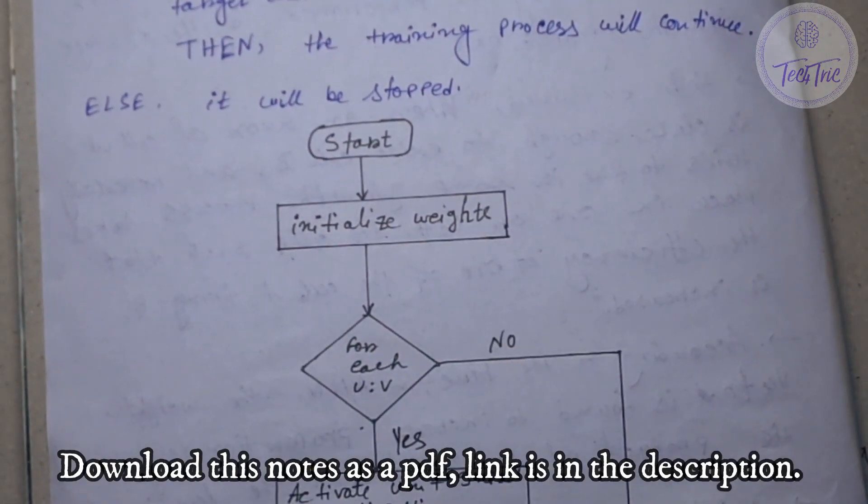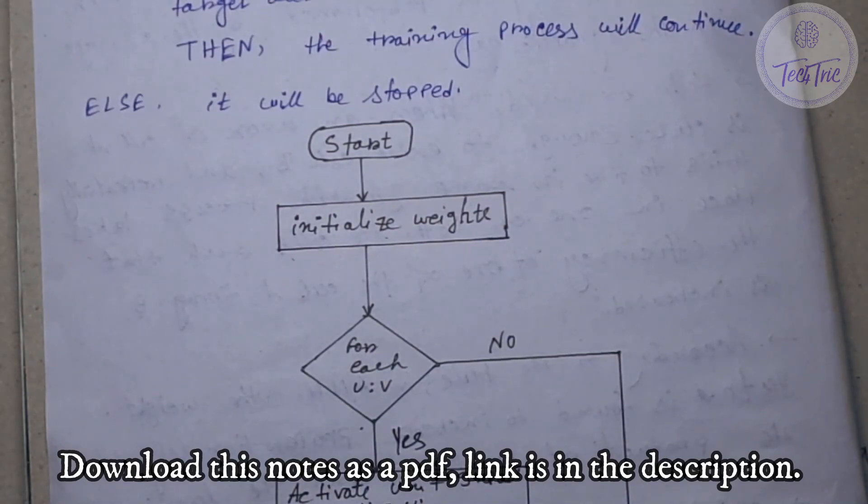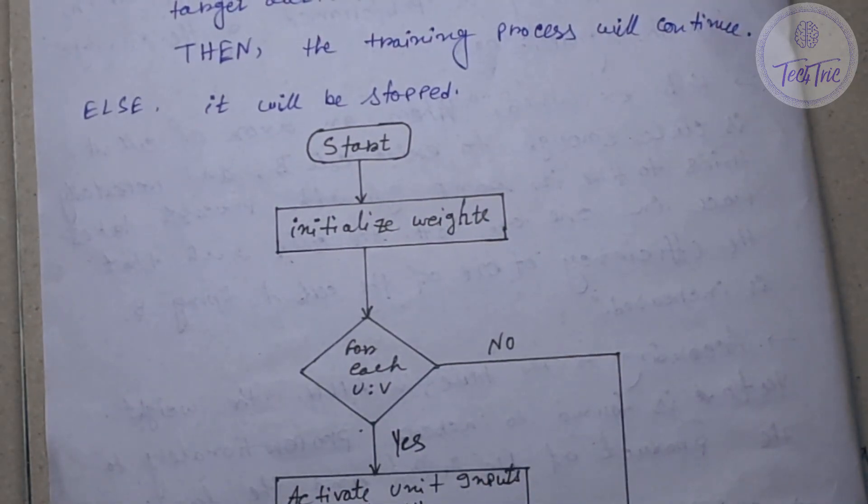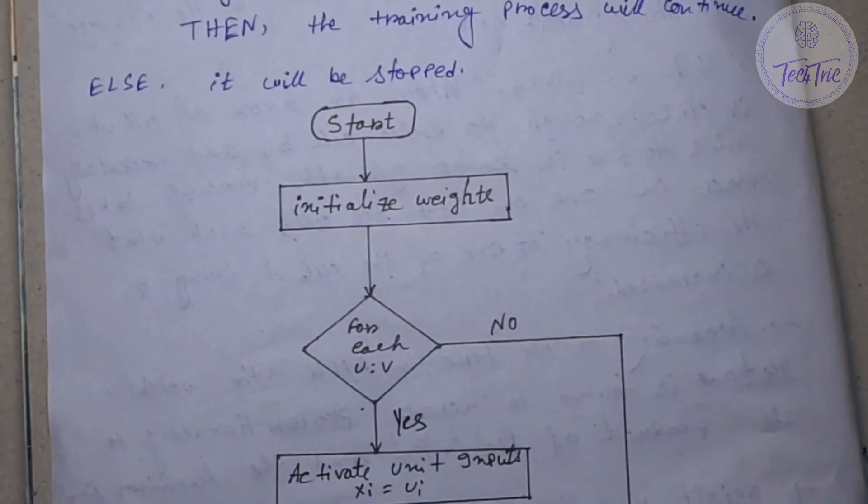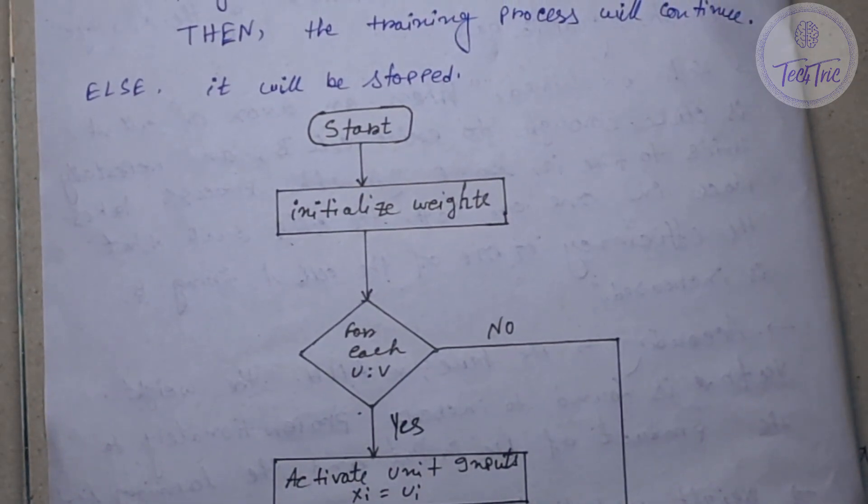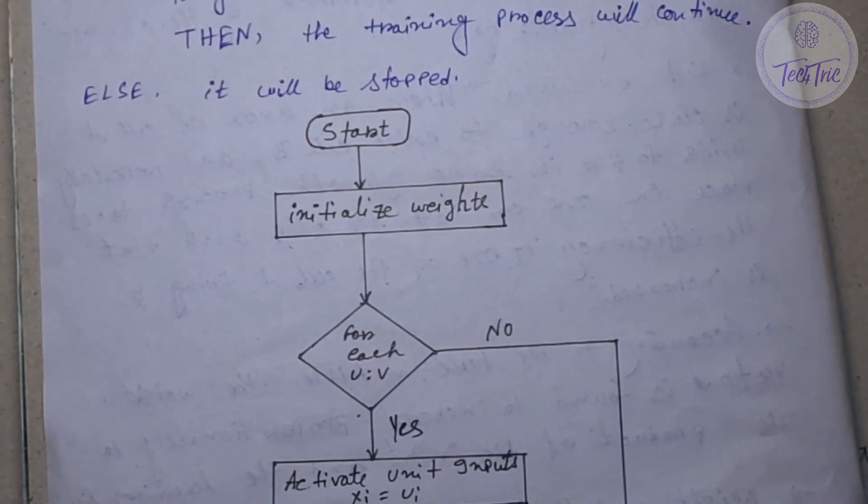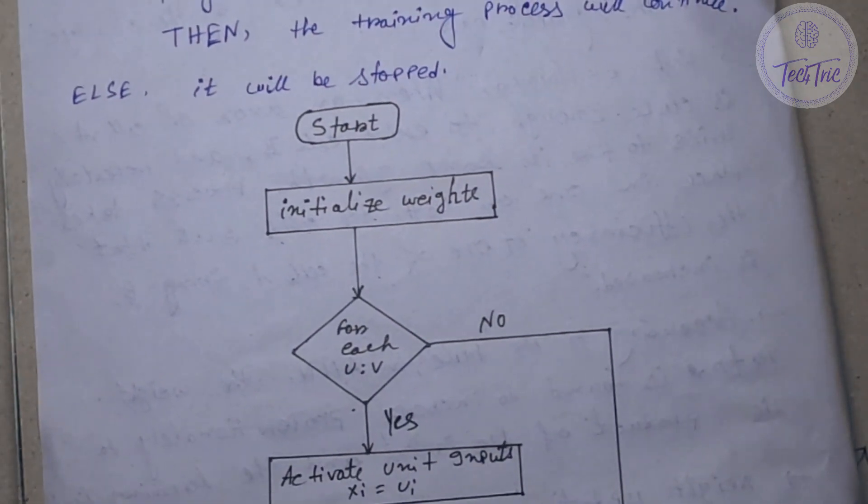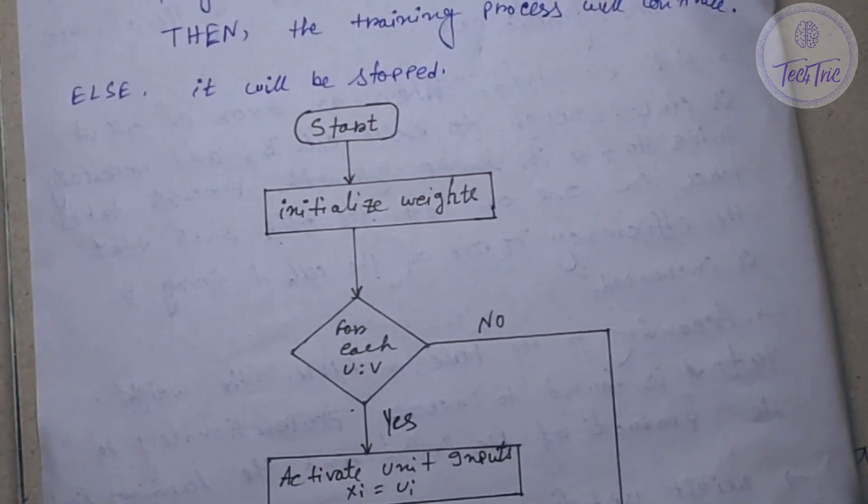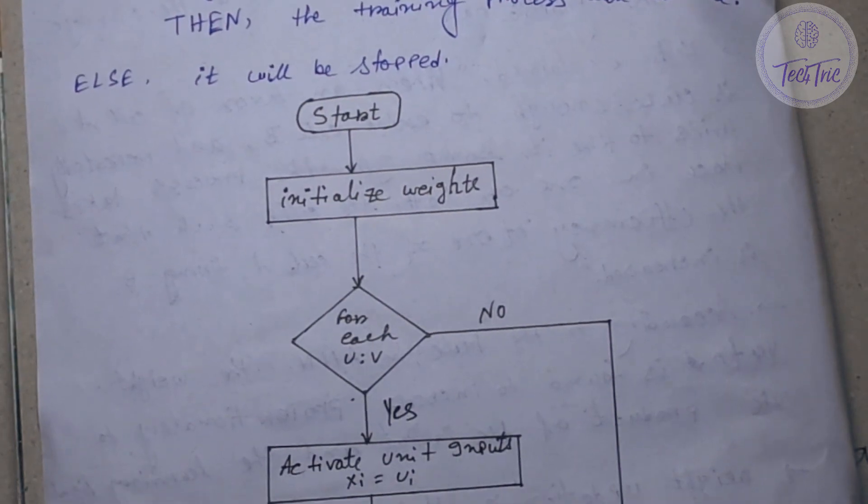So start, then initialize the weights first. Then there is a decision box for each U and V. U refers to the training input and V refers to the target output. For each U and V, if there exists a pair of training input and target output, then the training process will continue.